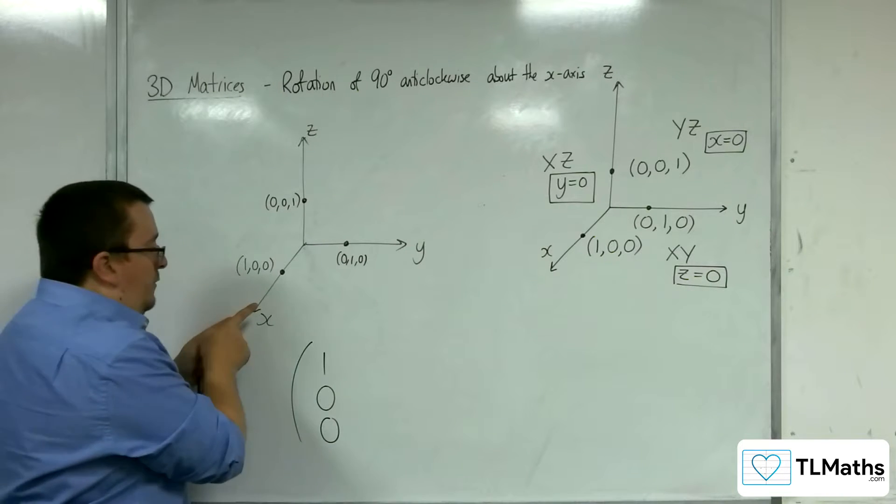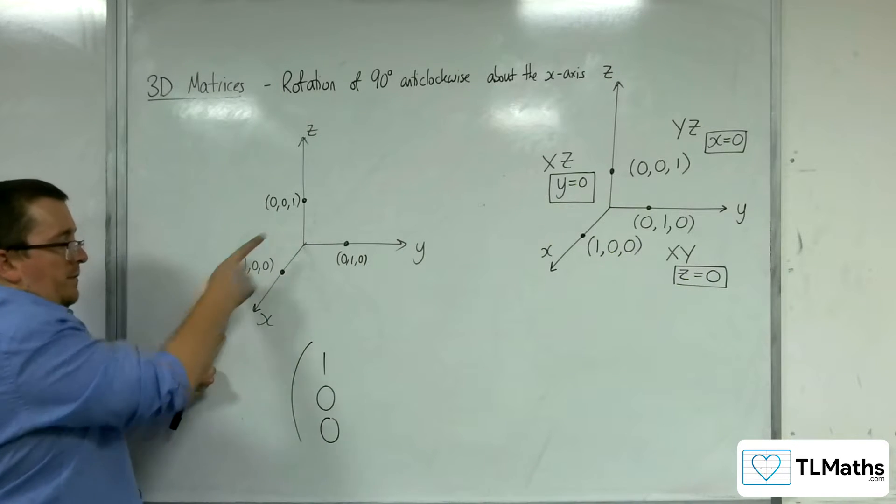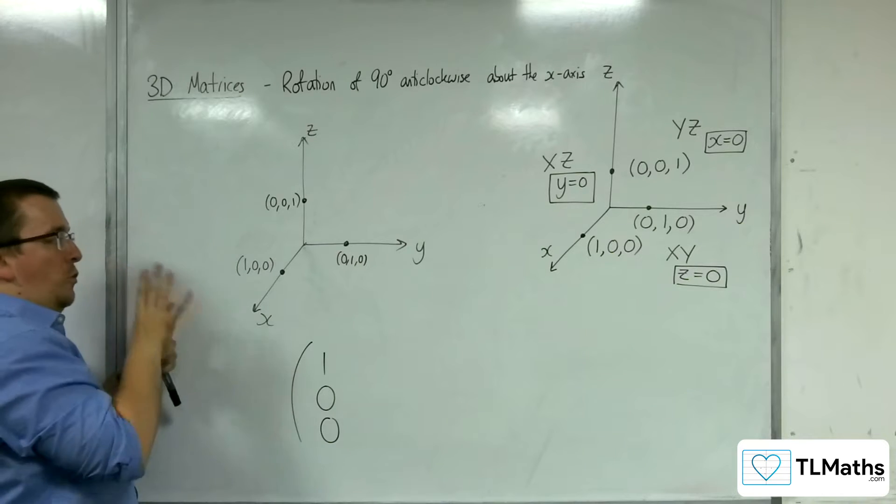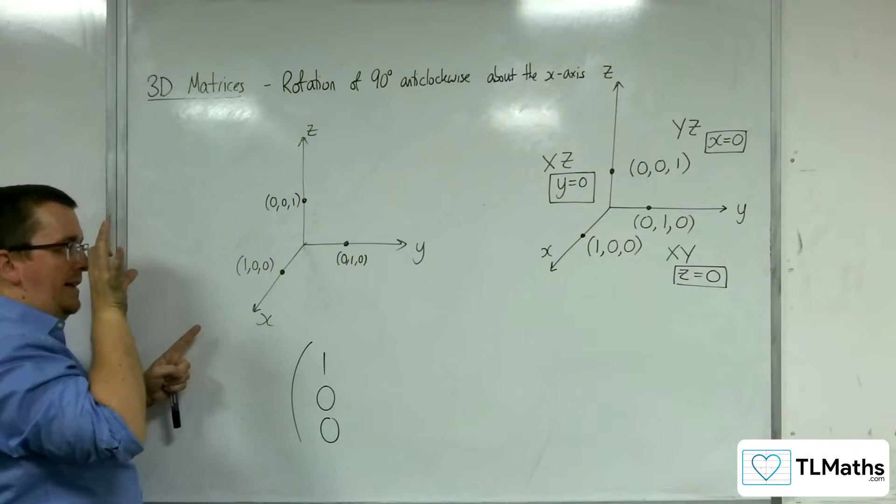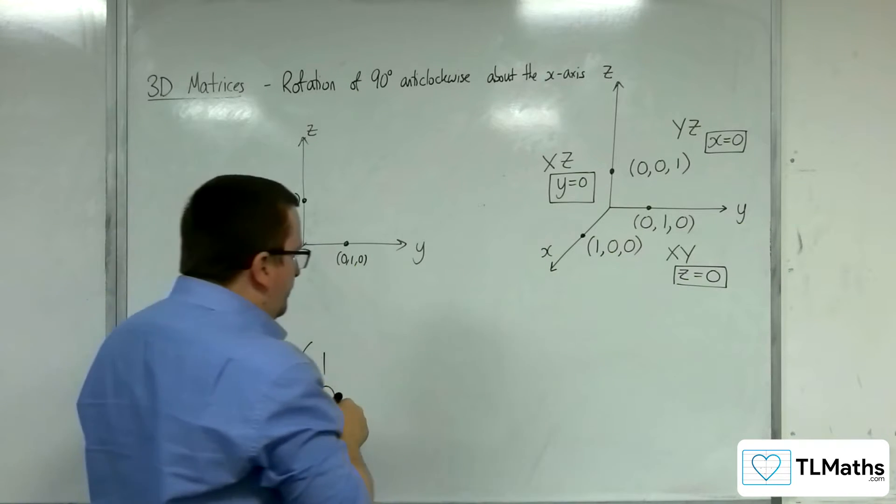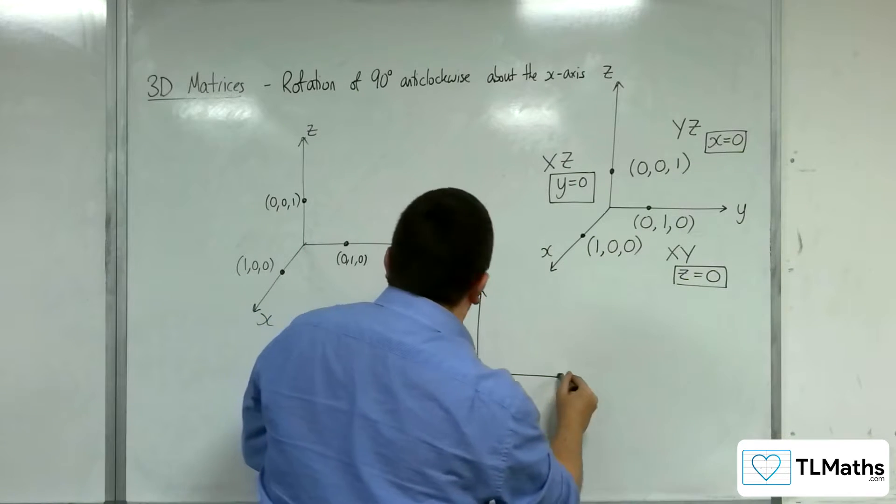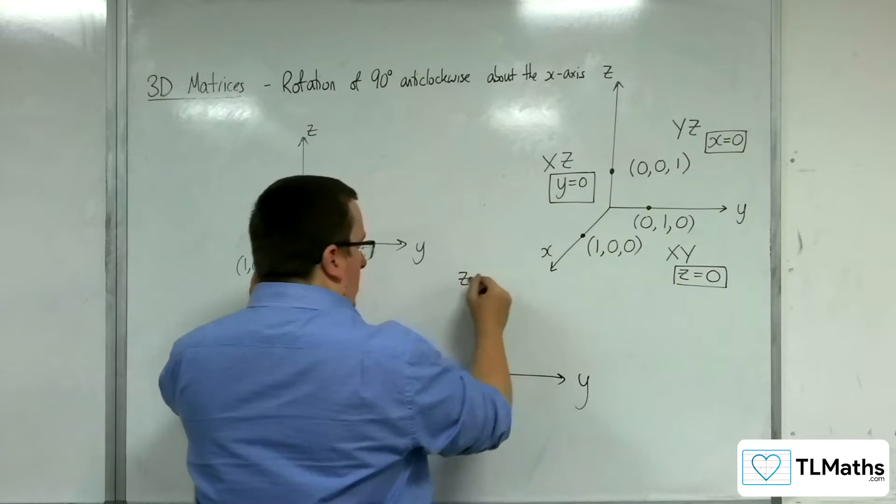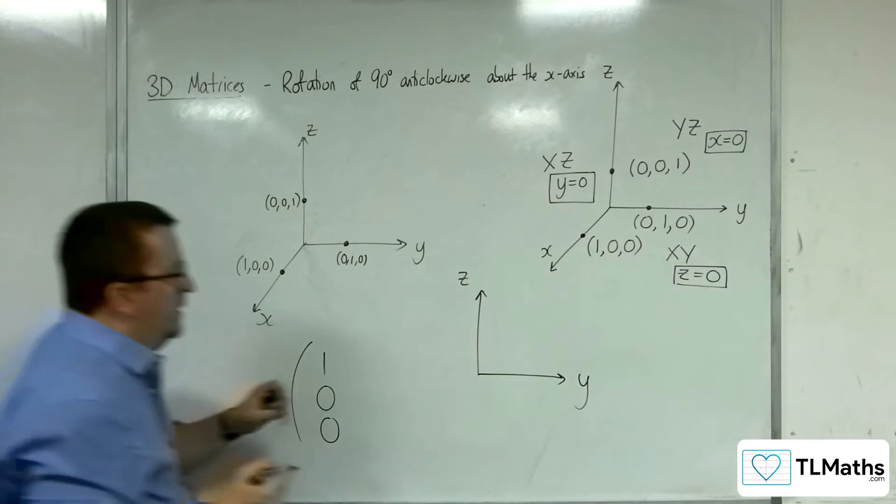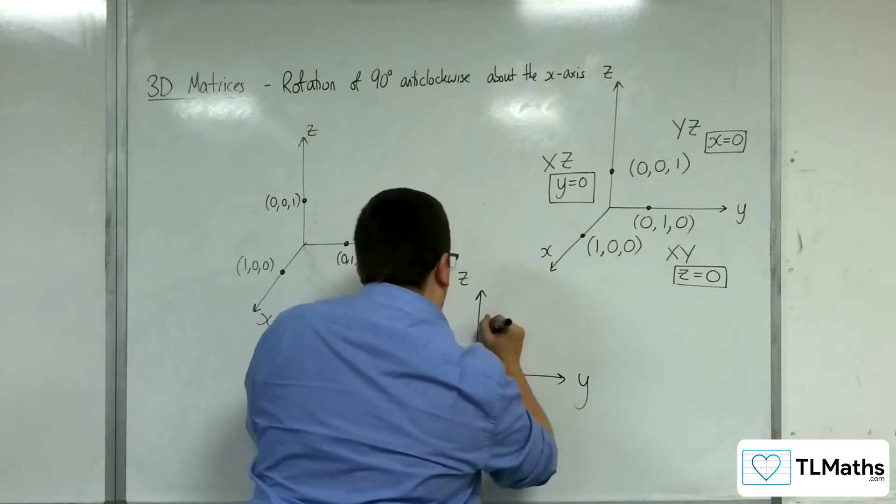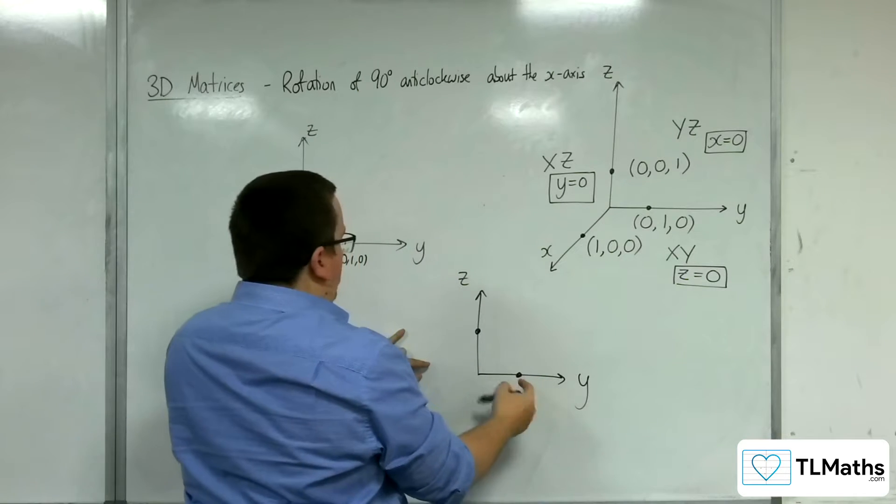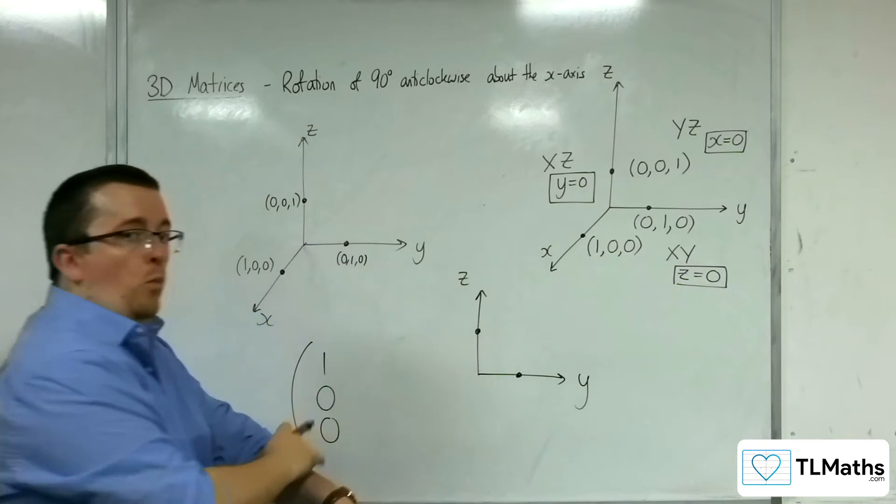Now, you're looking down that line, and you've got to imagine then, if I'm looking down that line, then what you see will be the y and z-axis. You'll see the points 0, 1, 0 and 0, 0, 1.